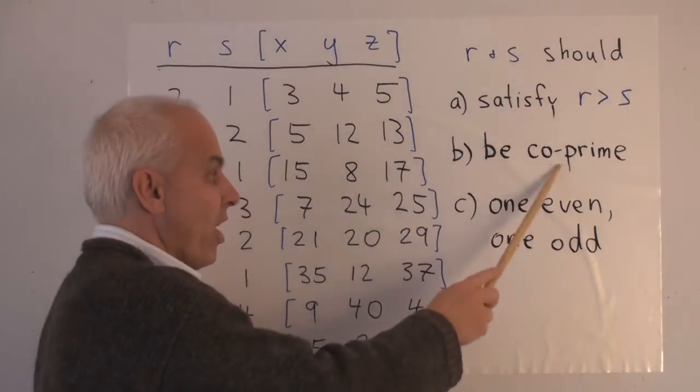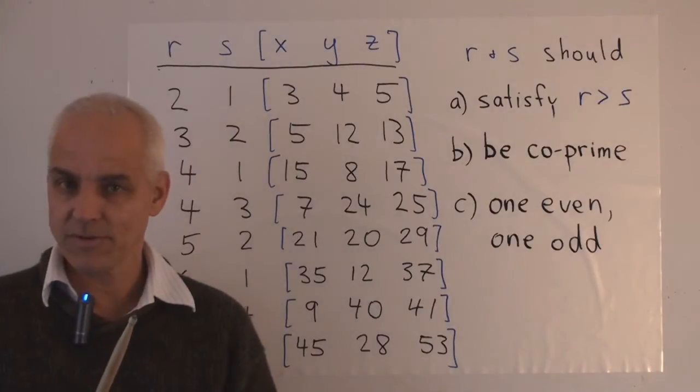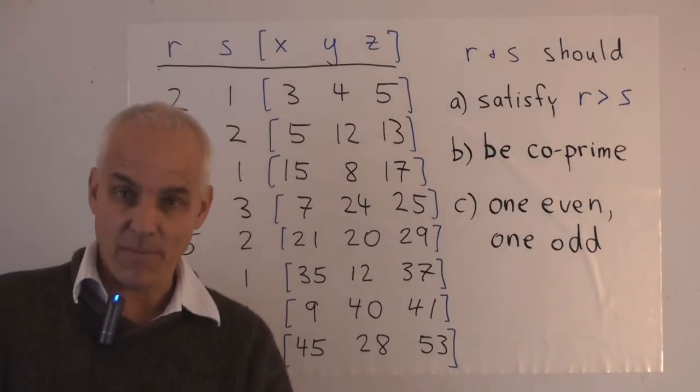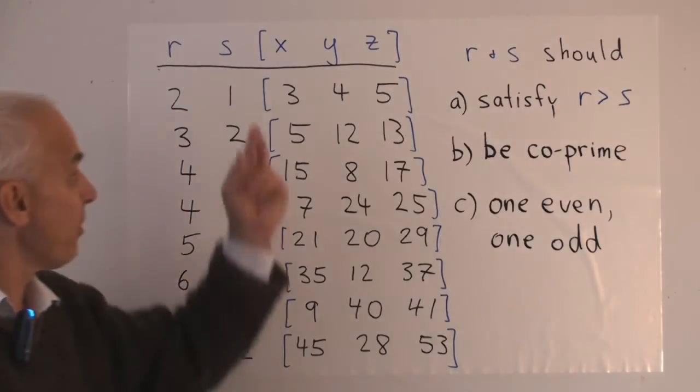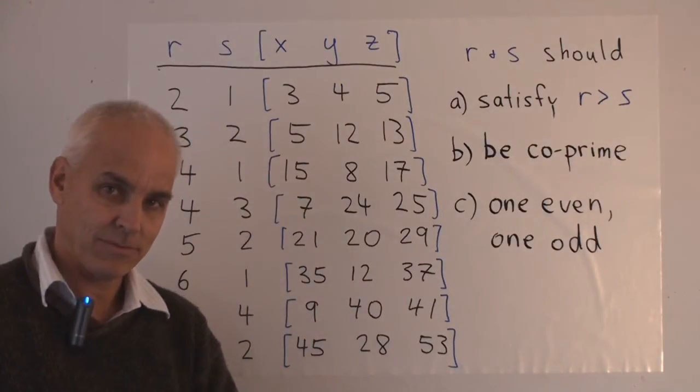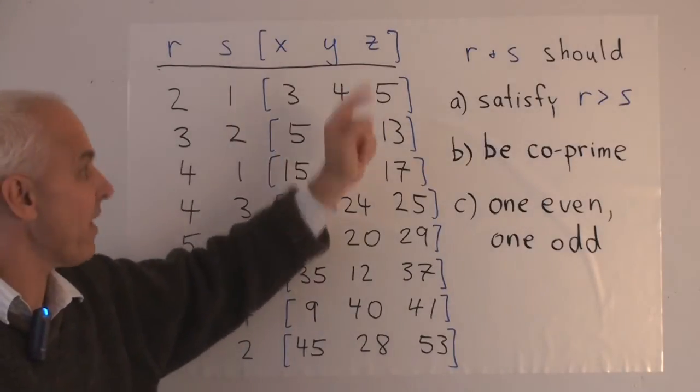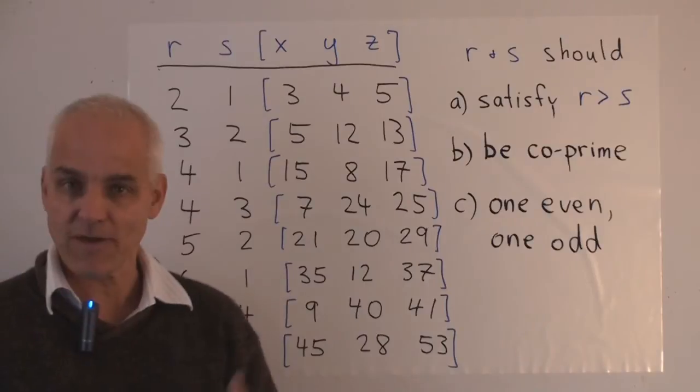Secondly, we want r and s to be coprime or relatively prime. That means they shouldn't have a common factor. Because if they did have a common factor, then both x, y, and z would also have that common factor. r²-s² would have that factor, 2rs would have that factor, and r²+s² would also have that common factor.